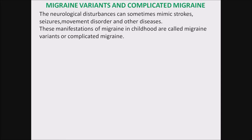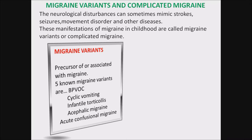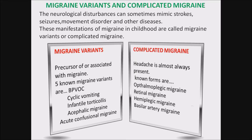Migraine variants and complicated migraine: neurological disturbances can sometimes mimic strokes, seizures, movement disorders, and other diseases. These manifestations of migraine in childhood are called migraine variants or complicated migraine. Migraine variants are precursors of or associated with migraine — known variants include BPVOC, cyclic vomiting, infantile torticollis, acephalic migraine, and acute confusional migraine. In complicated migraine, headache is almost always present. Known forms include ophthalmoplegic migraine, retinal migraine, hemiplegic migraine, and basilar artery migraine. In complicated migraine, there are higher chances of developing strokes in the future.